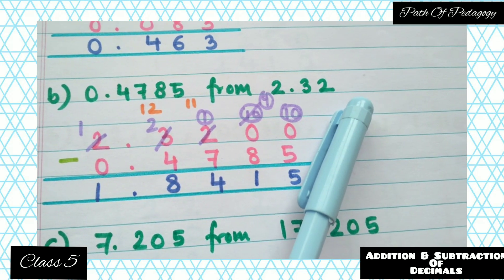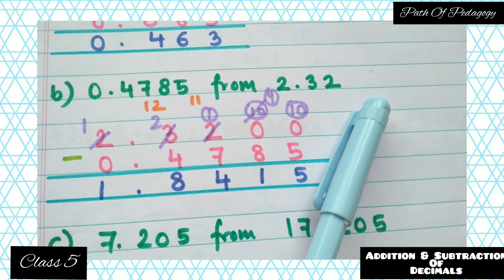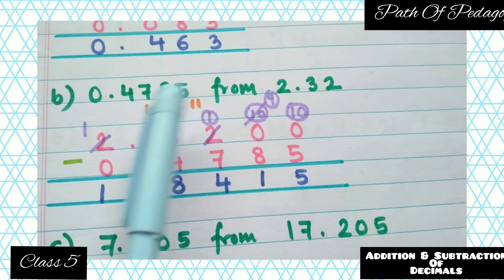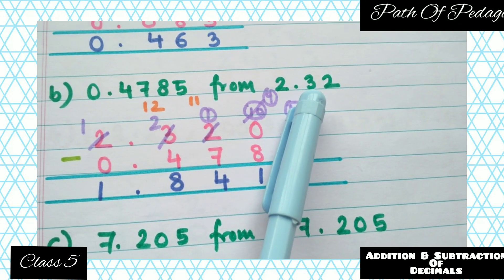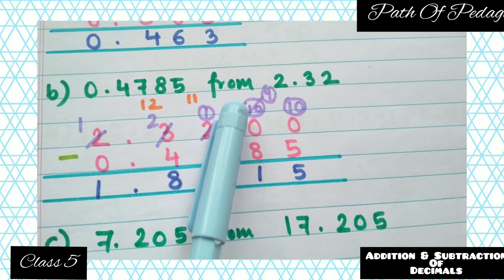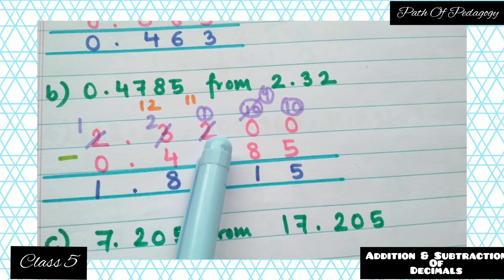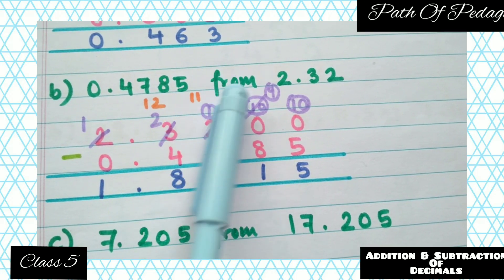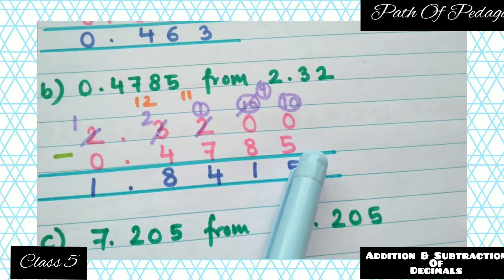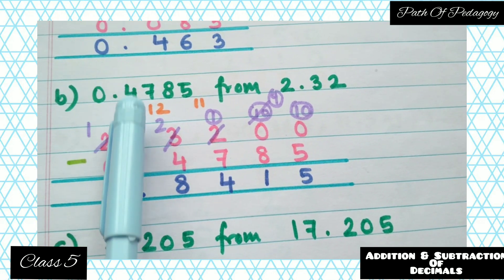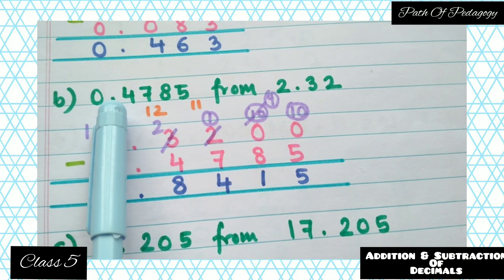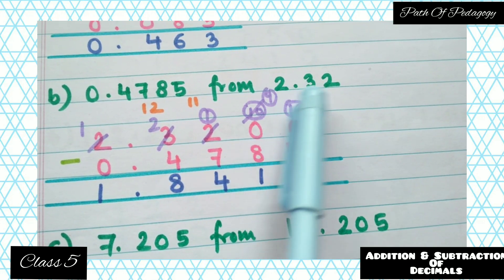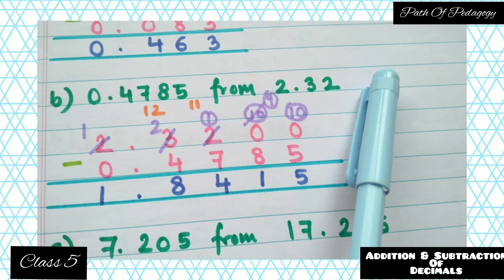Question b: subtract 0.4785 from 2.32. In subtraction, the decimal after the word 'from' comes first, so write 2.32 first. Then write 0.4785 below it. This decimal has four numbers after the decimal point and 2.32 has only two, so you have to add two zeros to the extreme right of 2.32.